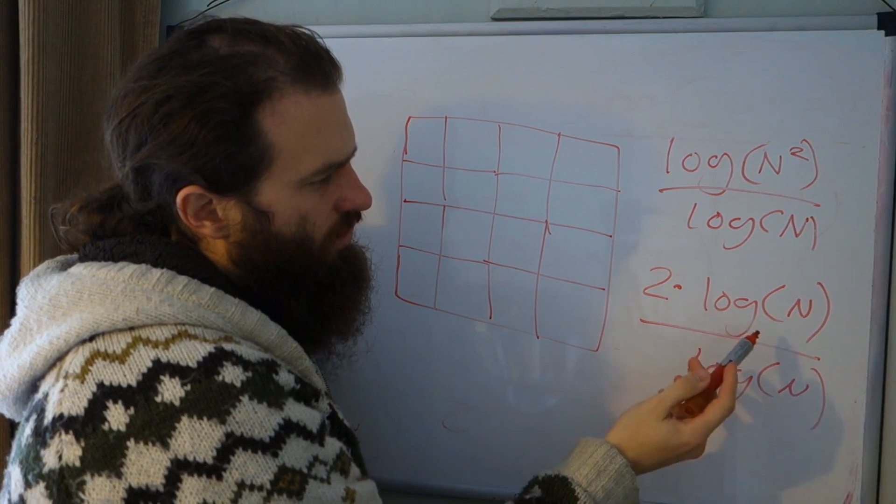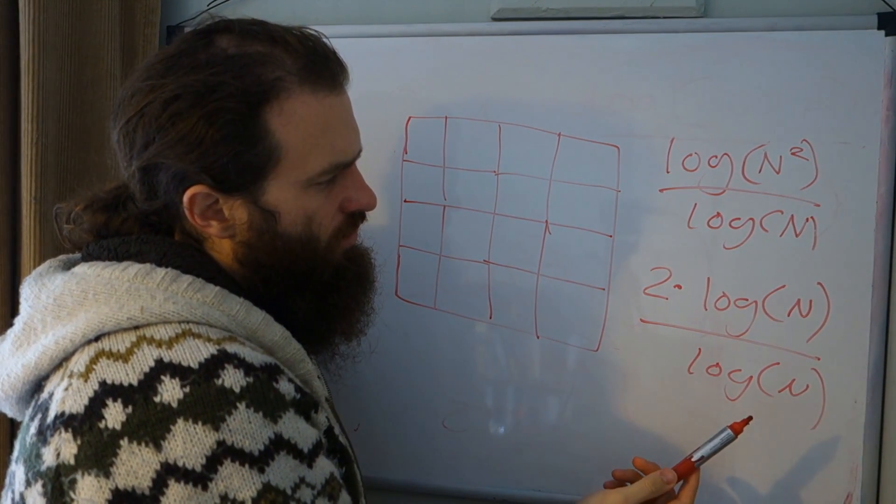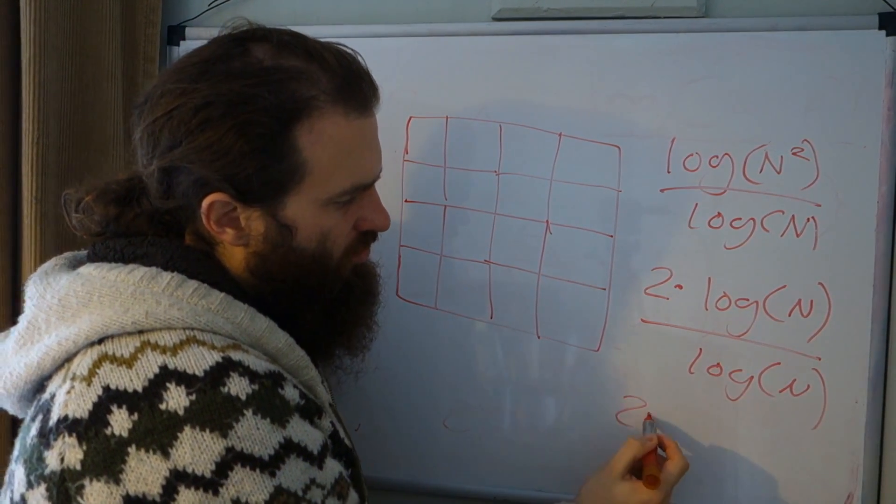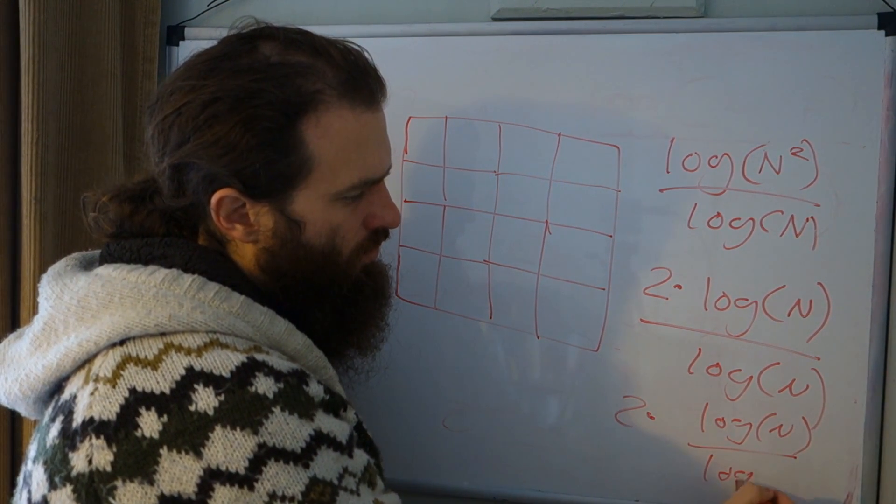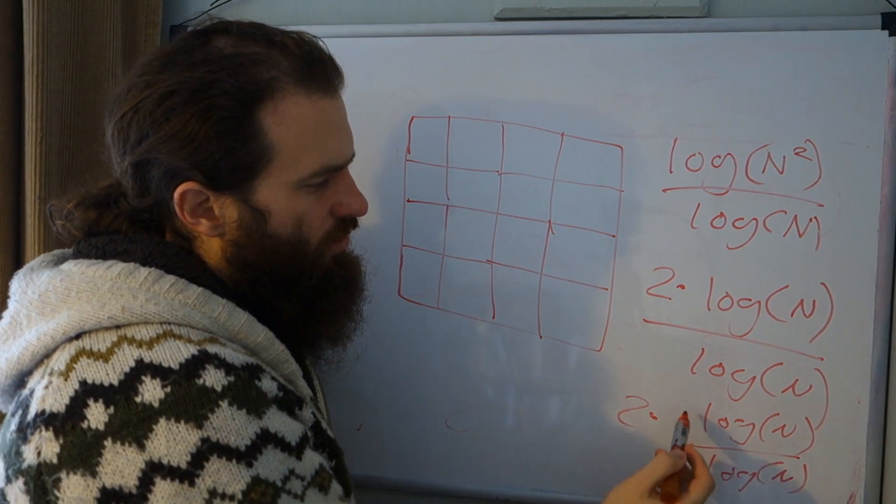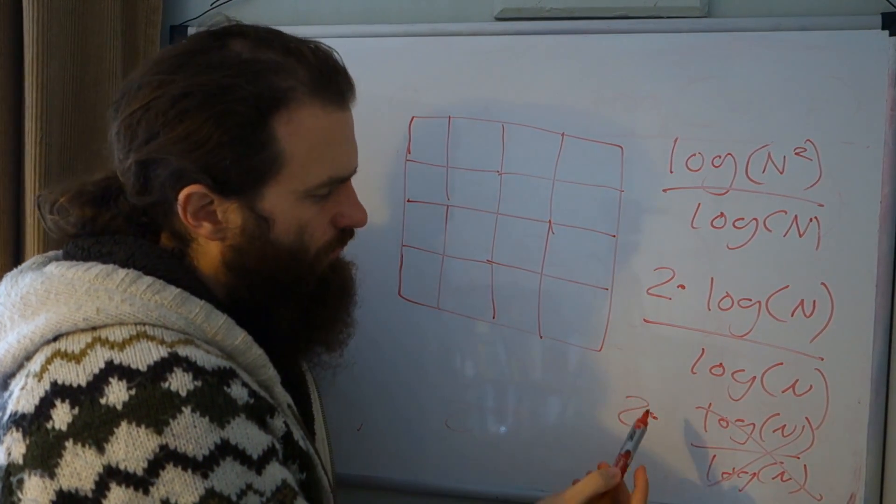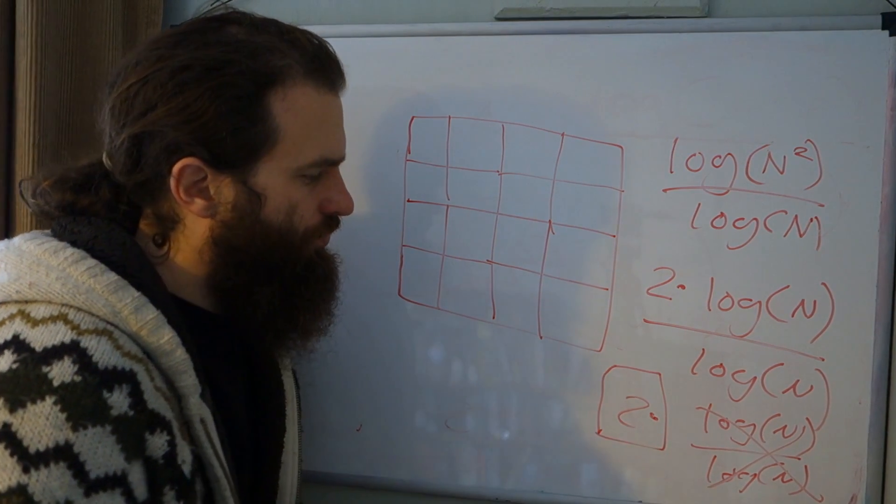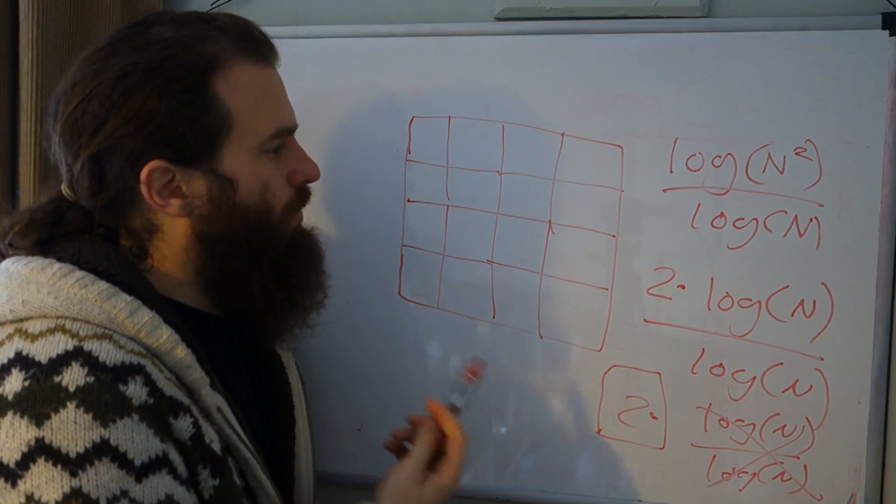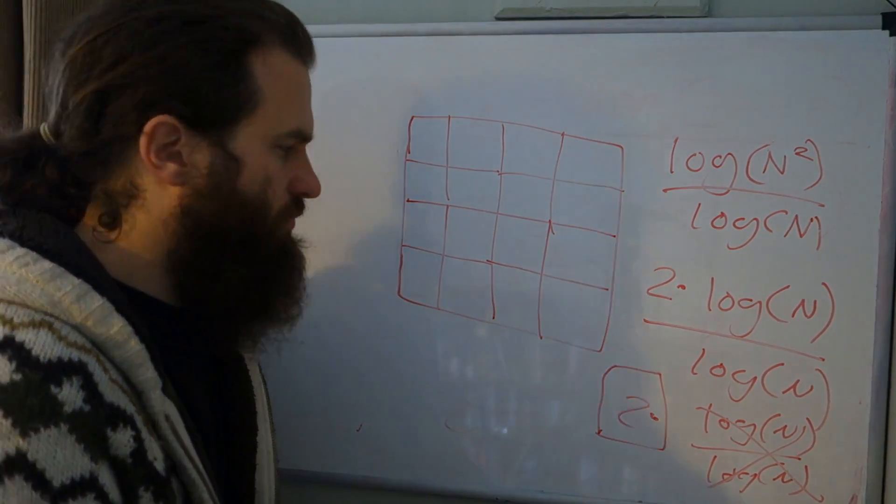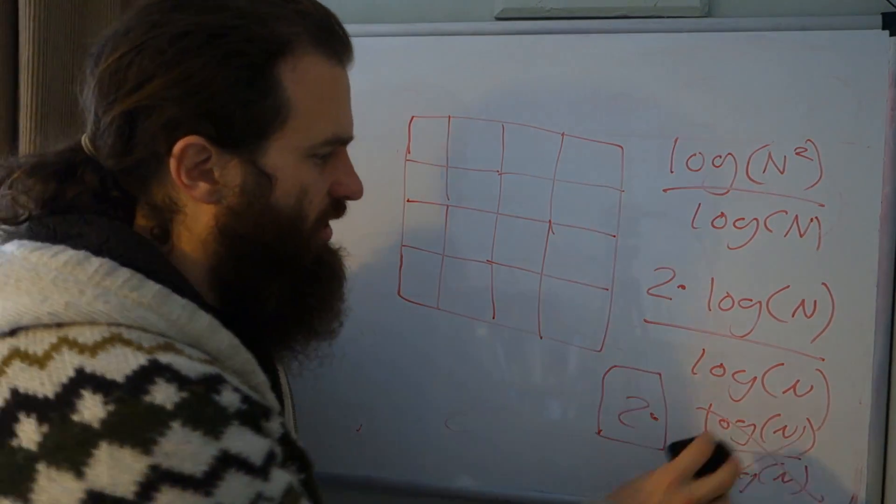And with logarithmic manipulation, we can say that that is 2 log n over log n. And of course, these cancel out because this is the same as saying 2 times log n over log n. And that goes away because that's 1. So we get the value 2. So the dimensionality, the fractal dimensionality of a plane is 2. So that's how we compute the fractal dimensionality of a plane.